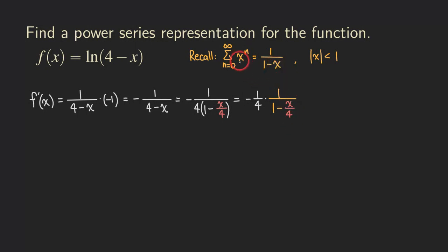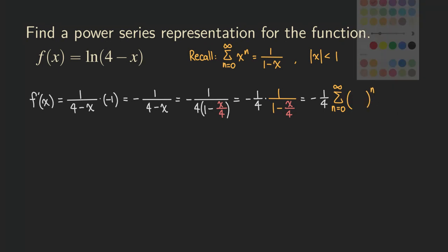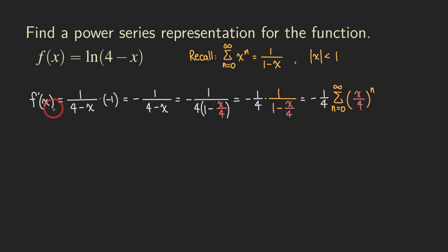We replace x with x over four in the geometric series formula to convert this into a series. So f prime equals negative one over four times the summation of x over four raised to the n. We've found a power series representation for f prime, but we need f — the ln function — not f prime.